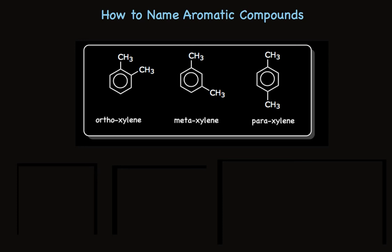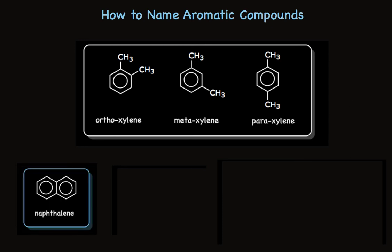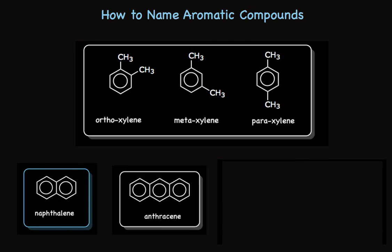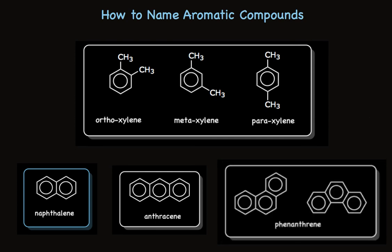There are a few key polycyclic aromatic compounds — compounds that have more than one aromatic ring. Naphthalene has two rings that share a side like Siamese twins. The compound that has three rings with two shared sides is called anthracene. And if those three rings share sides in a different way, we have a compound called phenanthrene. I've written it two different ways here — this is exactly the same structure.